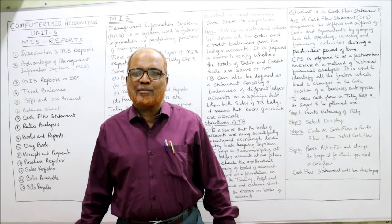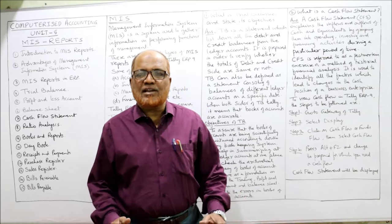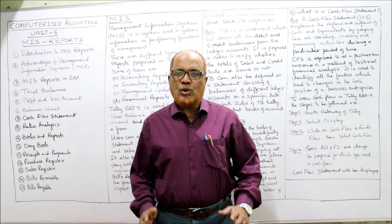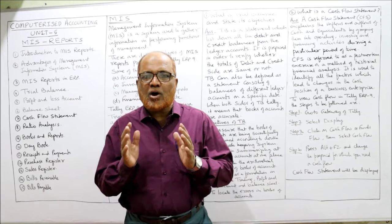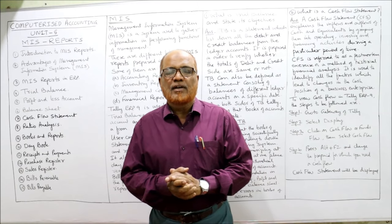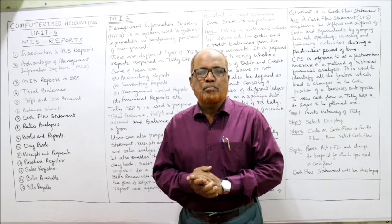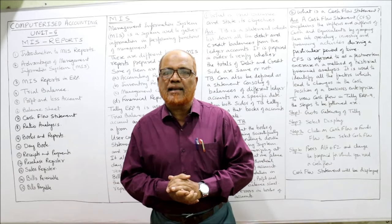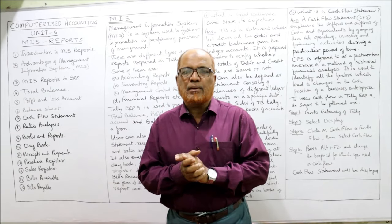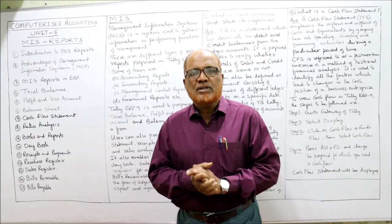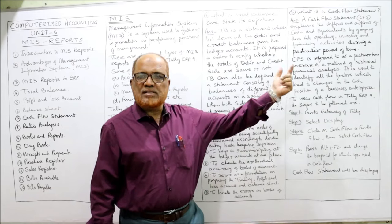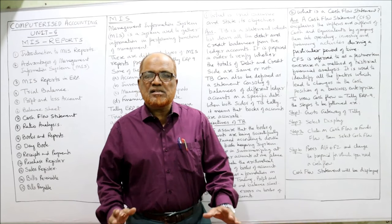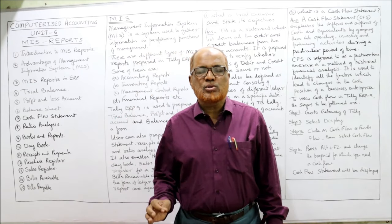Hello viewers, welcome to my channel. I'm Hashem Ali Khan. I'm starting the last and final unit of the subject Computerized Accounting — Unit Number Five. In this unit I'm going to explain the contents of Unit 5, that is MIS reports — Management Information System — what reports can be prepared from Tally ERP 9, the trial balance, its objectives, the cash flow statement, and how it is displayed in Tally ERP 9.